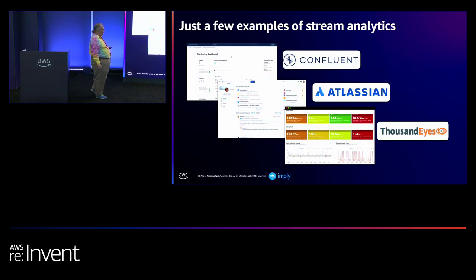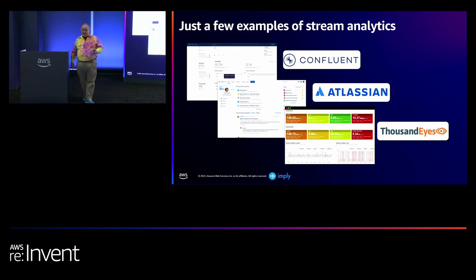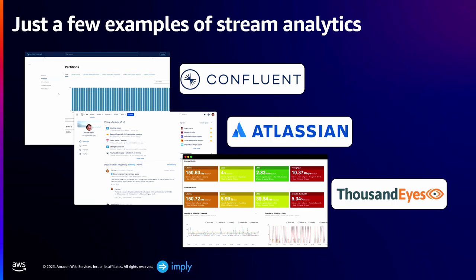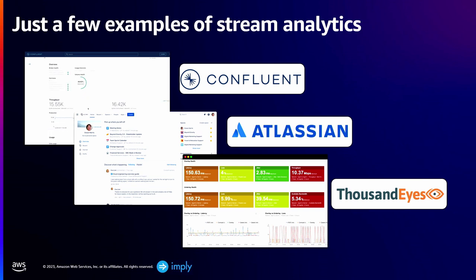A few examples of who's doing this in the real world — and how you may actually be using it indirectly right now. One example is ThousandEyes, a great observability company. They put lots of sensors and open telemetry data, pull it all back, and let you, on demand, see what's happening in your systems — whether it's on the cloud, off the cloud, multi-cloud, whatever. They use Druid to present these dashboards.